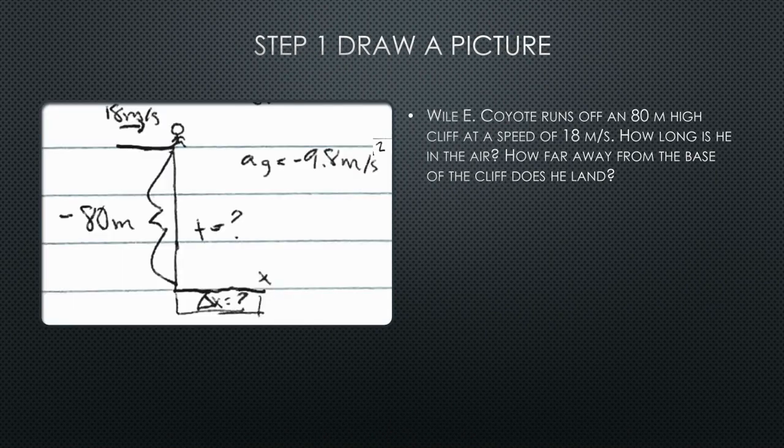First, draw a picture. You should always write acceleration due to gravity as negative 9.8 meters per second squared and then label everything else.